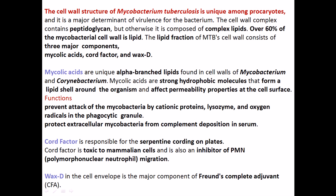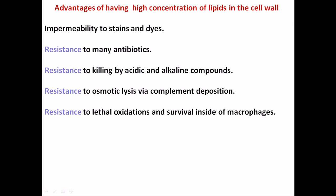The chord factor prevents polymorphonuclear neutrophil migration inside the body, thereby preventing the uptake of bacterial cells by those neutrophils. The third important factor is wax D, found in the cell envelope. It is a component of Freund's complete adjuvant system. Wax D is also a lipid and helps the bacteria escape from phagocytic cells.